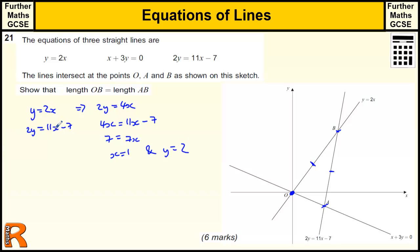Just check that with this one. When x equals 1, 11 minus 7 is 4. Divided by 2 gives us 2. So that's the first coordinate, (1, 2). And that will get you 2 marks.